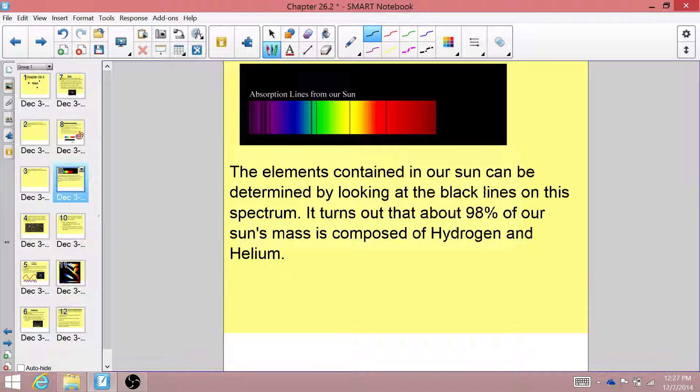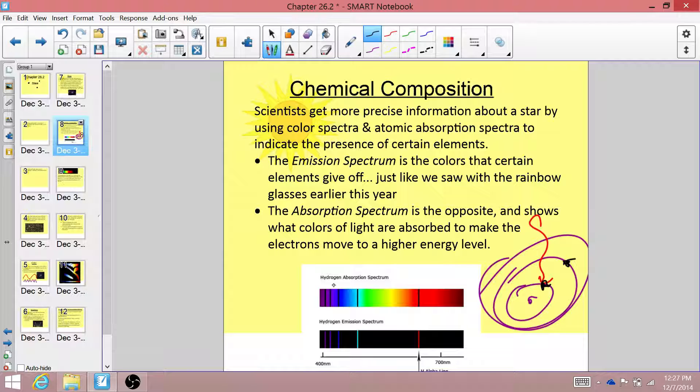Now the elements contained in our sun can be determined by looking at these black lines, the absorption lines. So if we look back here, hydrogen's absorption spectrum is exactly the opposite of the emission spectrum. There are two dark bands in the purple region, a blue, a teal, and a red.